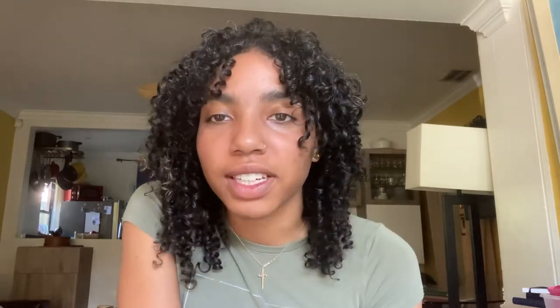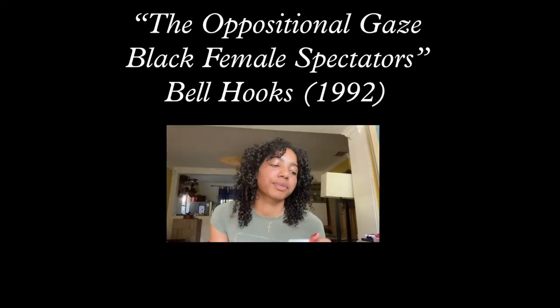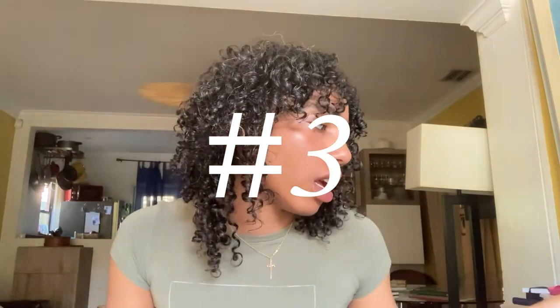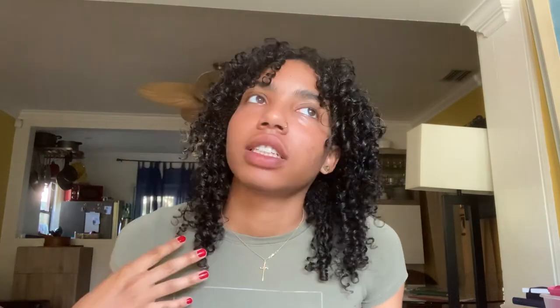That brings us to the oppositional gaze by bell hooks. A little background: the history of feminism is broken into different waves. Third wave feminism came about in the late 80s and early 90s. The second wave was very much about western white women, but in the third wave we start seeing intersectionality — recognizing that there are multiple spheres of oppression.